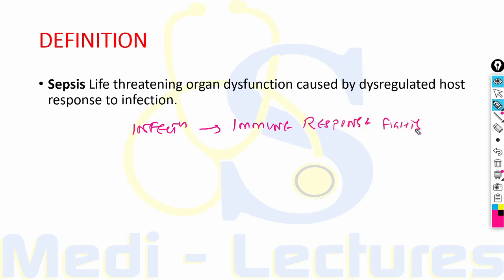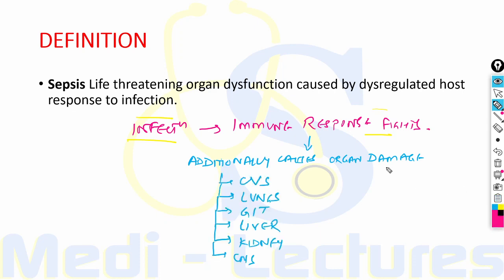But in addition to fighting against the offending organism which leads to infection, the immune response additionally causes organ damage. This organ damage due to the hyper-exaggerated immune response can lead to damage to multiple systems.